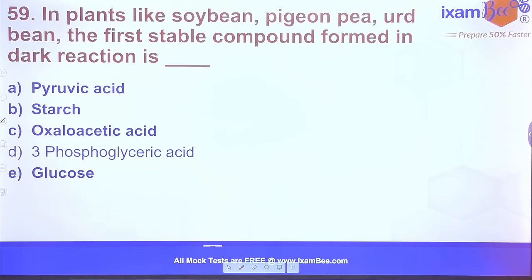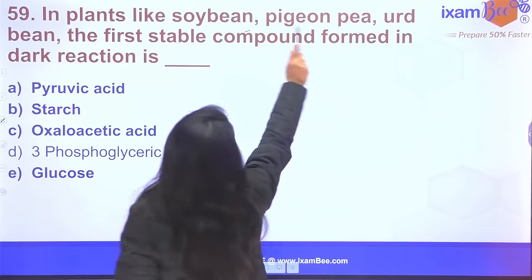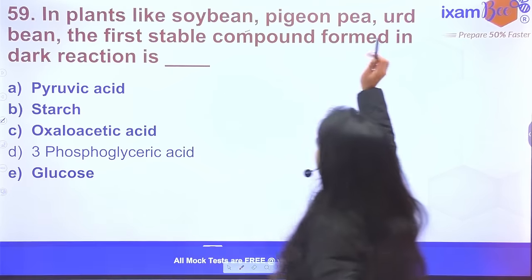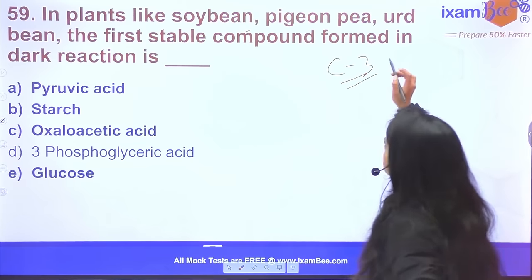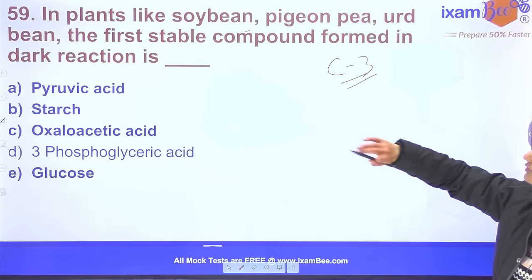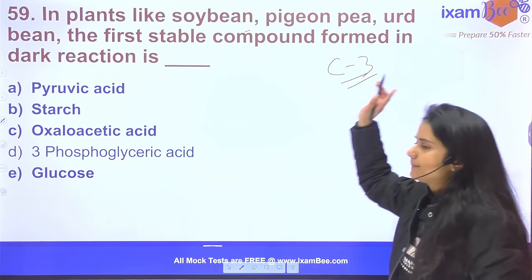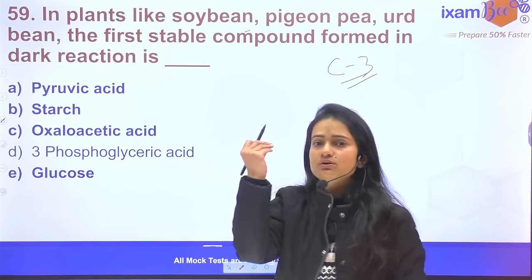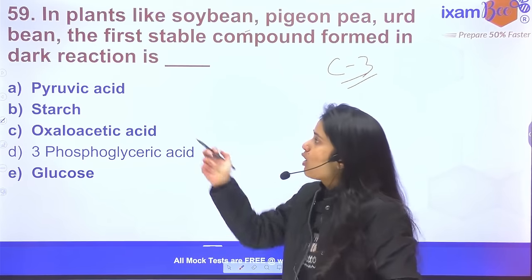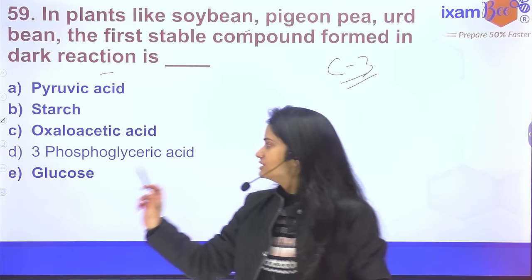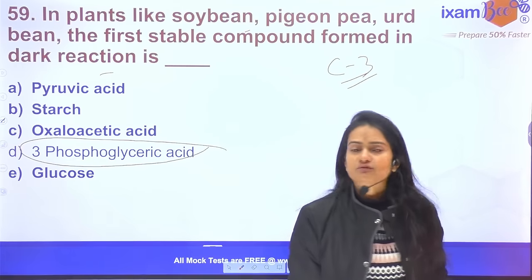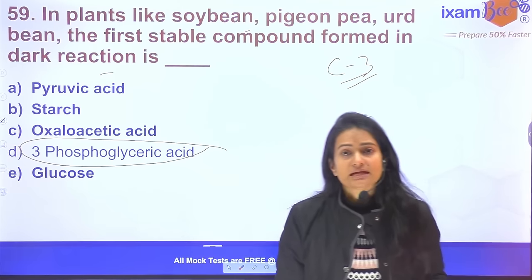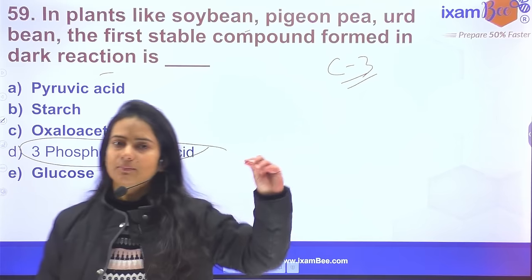Question 59: In plants like soybean, pigeon pea, and urd bean — these are all C3 plants. In C3 plants, the first stable compound of the dark reaction is 3-PGA (3-Phosphoglyceric acid).